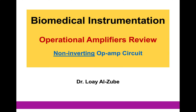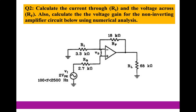To start with, this is the question we would like to solve — question number two from this series. In the first question, I analyzed an inverting operation amplifier circuit, so in this example we are going to analyze a non-inverting operation amplifier circuit. I would like to calculate the current passing through the input resistance, find the voltage across the feedback resistance, and calculate the voltage gain for this circuit — and I'm going to calculate it in two ways.